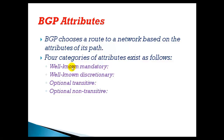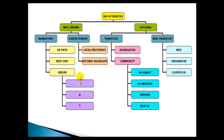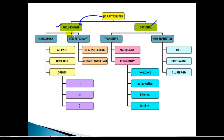We have a lot of attributes in BGP which can affect best path manipulation. BGP attributes are mainly classified into two main categories: well-known and optional. Well-known means recognized by every BGP peer — every router running BGP is going to understand this type of attribute.